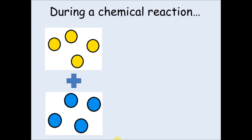Firstly, during a chemical reaction, two chemicals are added together. If they react, the particles from each chemical form bonds and join together. This is the formation of a new chemical.